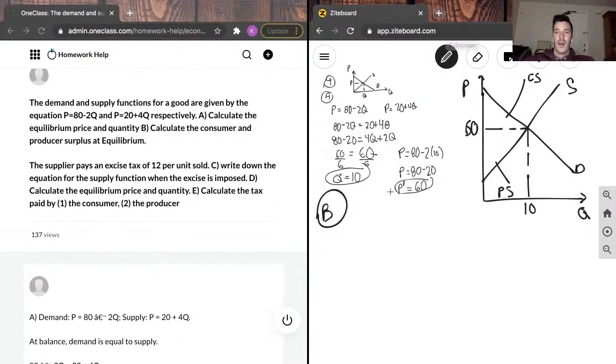So, if we look at our demand equation, which is 80 minus 2q, when the quantity is 0, we know that the price is going to be 80. So, we can draw that here. If we look at our supply equation, 20 plus 4q, we know that when the quantity is 0, price is going to be 20. So, we can draw that here.